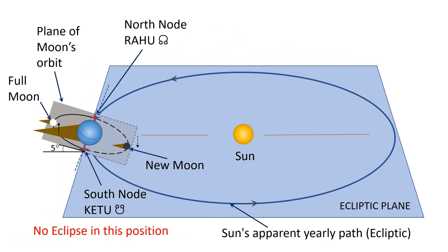Hence we don't have 24 eclipses in a year. I hope you now understand why eclipses don't occur every Full Moon and New Moon. That's all from me for now and I'll return with another video on Vedic Astrology next time. Thank you for watching.